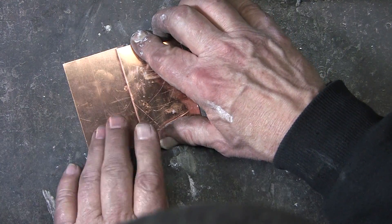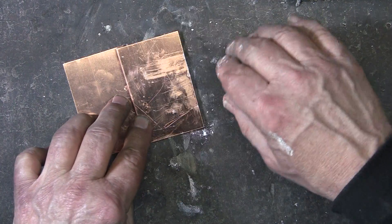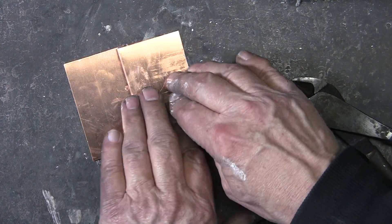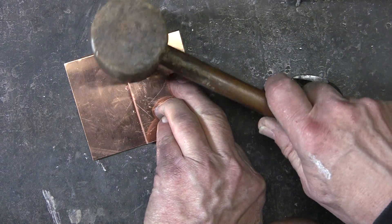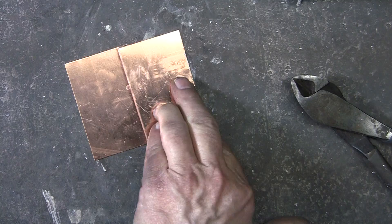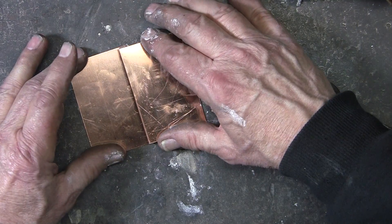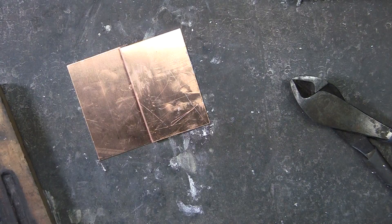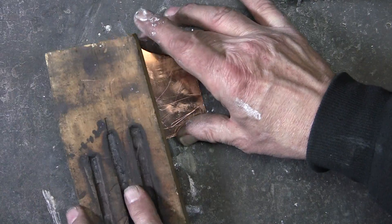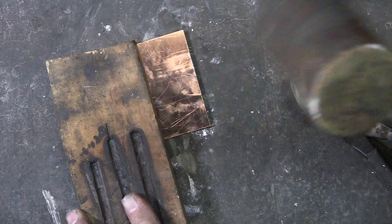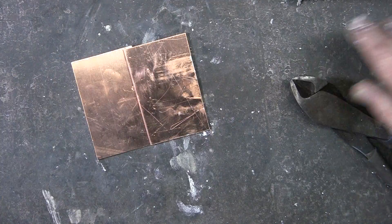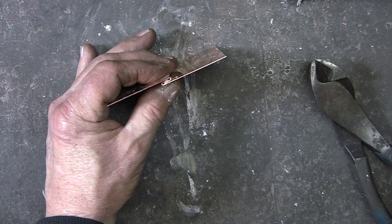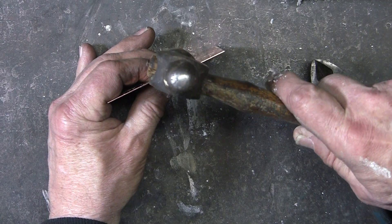Now comes the tricky part: to get this centered on there so it is square and does not move. Just a few taps with that mallet. Block of wood. Oops, that moved on me. Looks square. Just tap this end down just a bit.